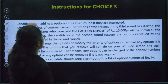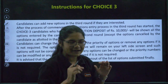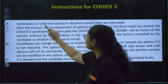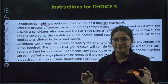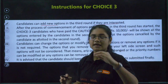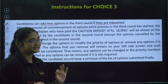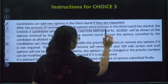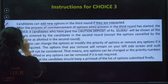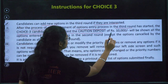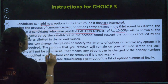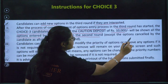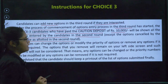Now let us move to students who have selected Choice 3 in Round 2 and see the special instructions from KEA. Candidates can add new options in the third round if they are interested. After the option entry process for the third round has started, Choice 3 candidates who have paid the caution deposit of ₹10,000 will be shown all the options entered in the second round, except the option cancelled and allotted in the second round.